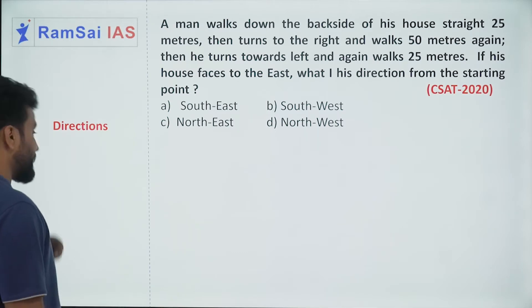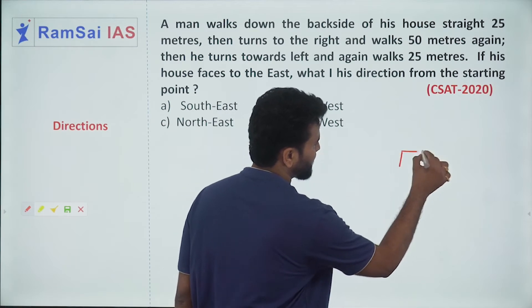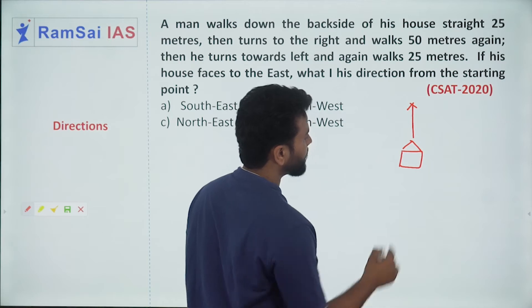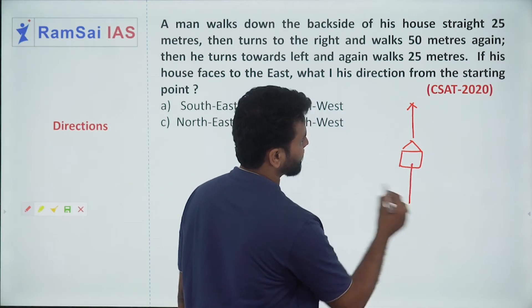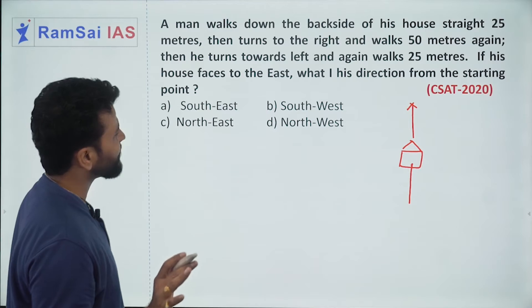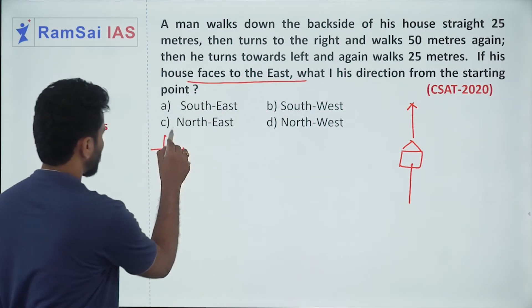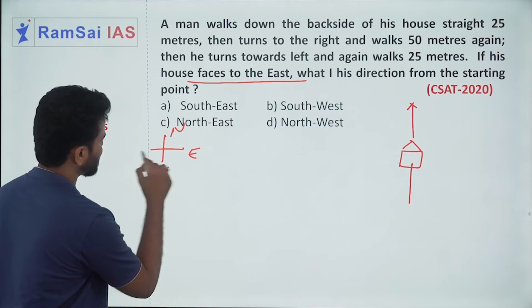So, let me draw the diagram first. Imagine this is his house facing this direction and straight back. Wait. In the question it was given his house is facing towards east.